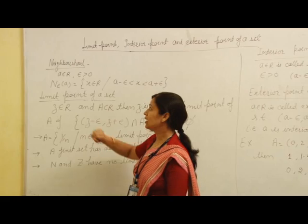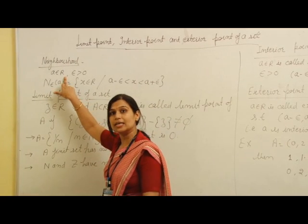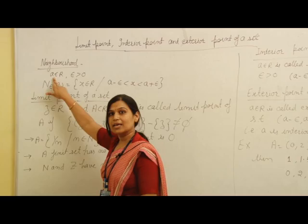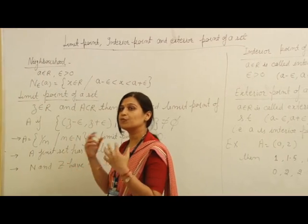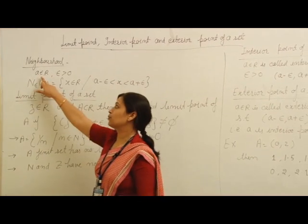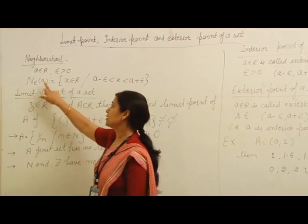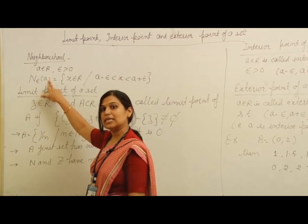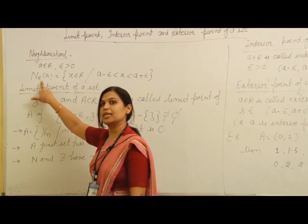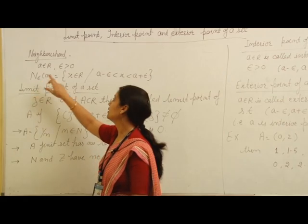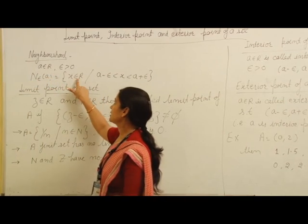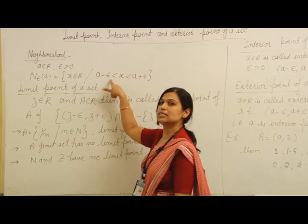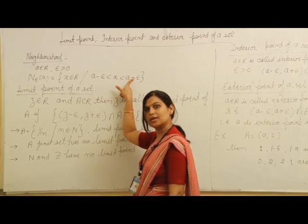What do you mean by neighborhood? Let A be any real number. The neighborhood of A is any open set which contains that point A. Mathematically, it is represented by epsilon-neighborhood of A, where A is that point and epsilon is any positive number. This contains the real numbers which are between A minus epsilon to A plus epsilon.